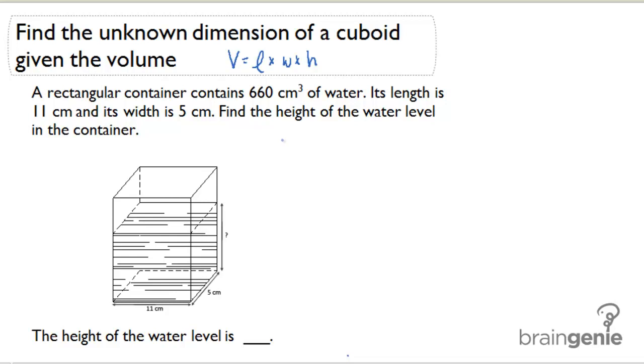A rectangular container contains 660 cubic centimeters of water. Its length is 11 centimeters and its width is 5 centimeters. Find the height of the water level in the container. So let's take a look.